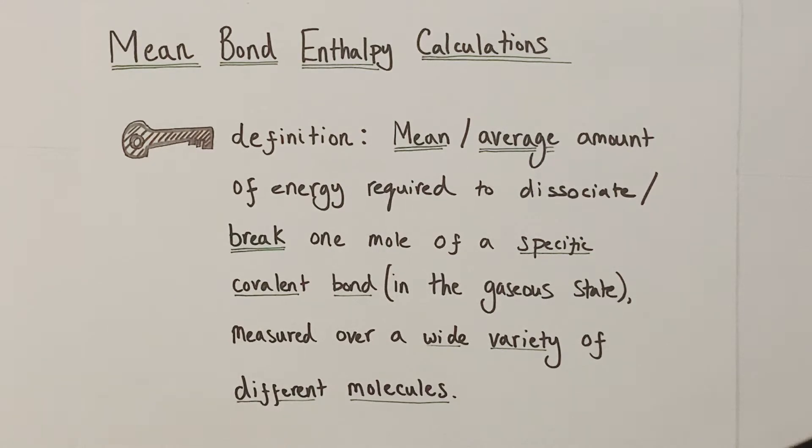So a mean bond enthalpy is defined as being the mean or average amount of energy required to break or dissociate one mole of a specific covalent bond found in the gaseous state, but measured over a wide variety of different molecular environments.